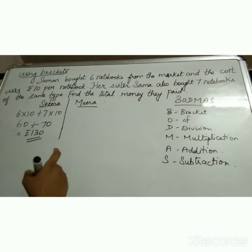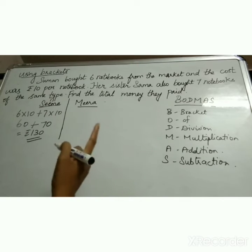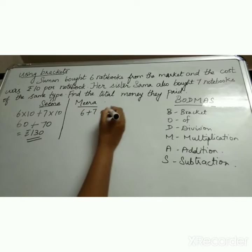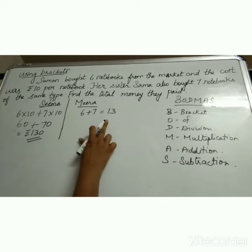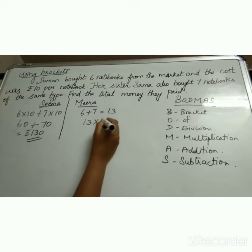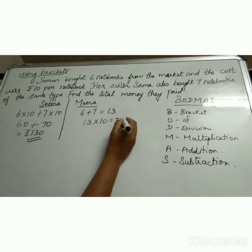Now Meera is calculating it in another way. What she is doing, first she is adding the number of notebooks. So the number of notebooks are 6 plus 7 is equal to 13. So 13 notebooks are there. So cost of 1 notebook is 10, so for 13 notebooks we have to find. So 13 into 10 will be rupees 130.